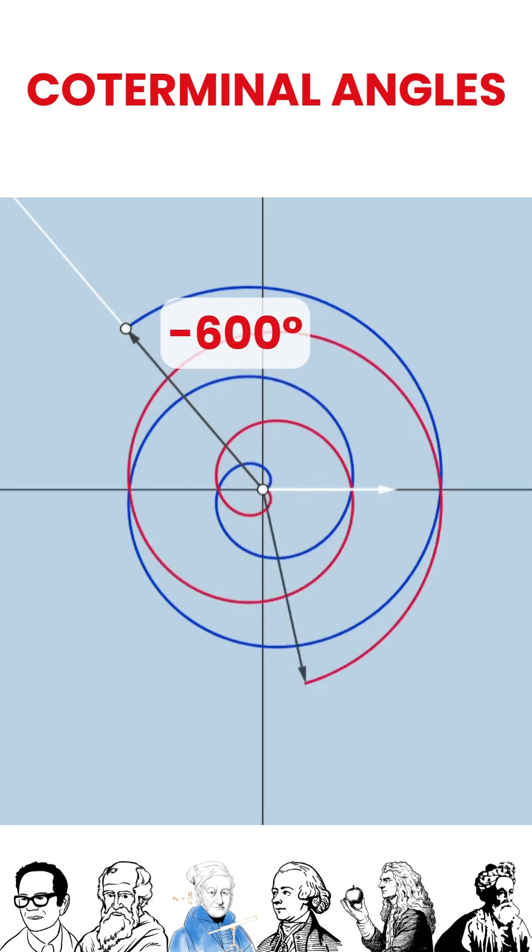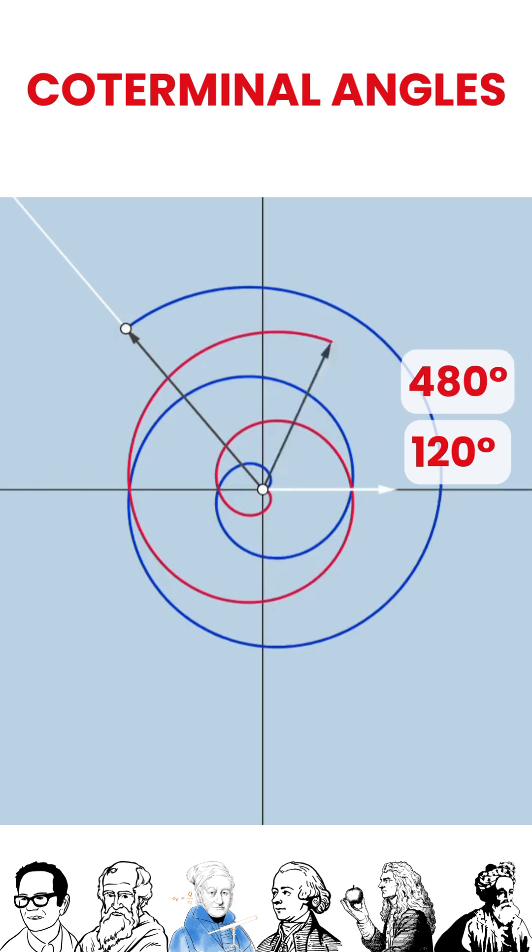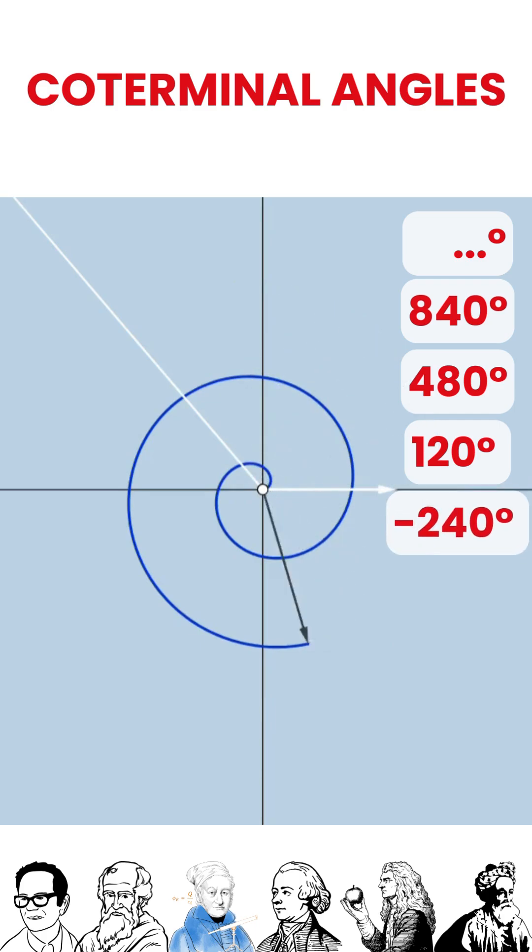Positive coterminal angles are 120, 480, 840, and so on. Negative coterminal angles are negative 240, negative 600, negative 840, and so on.